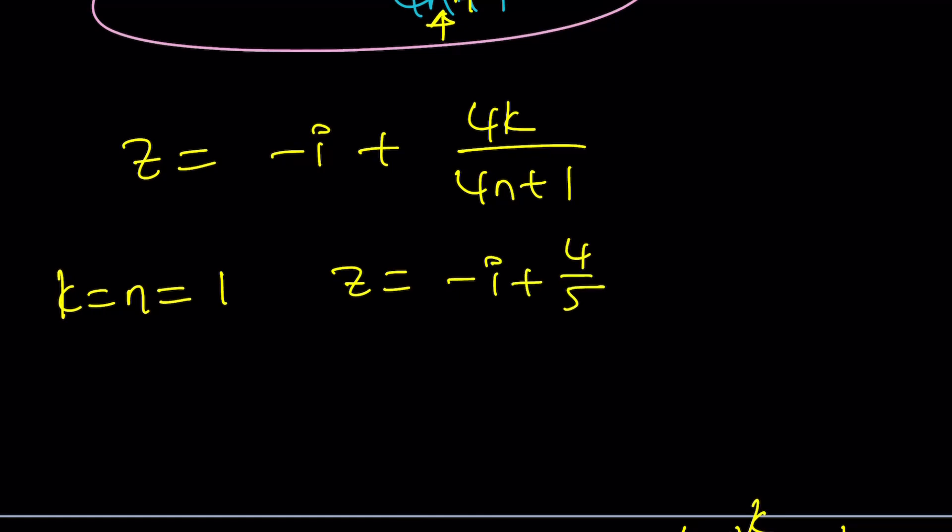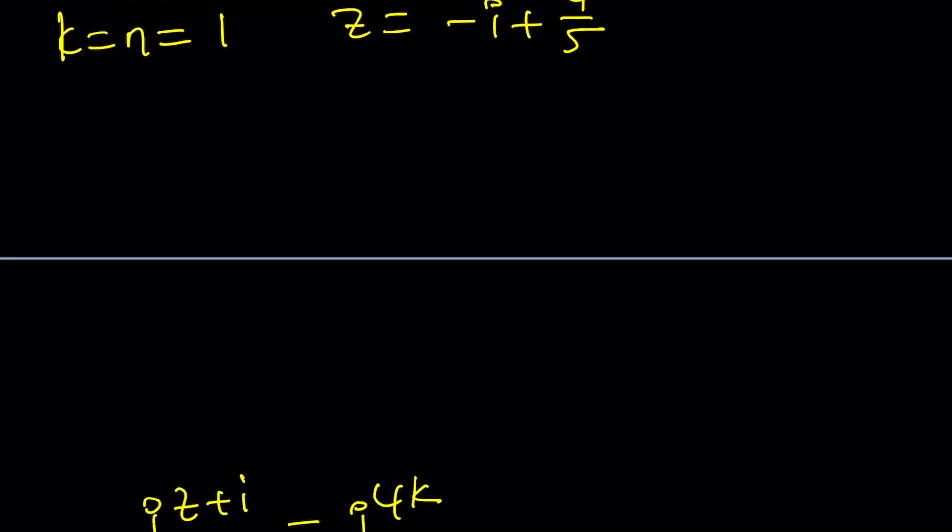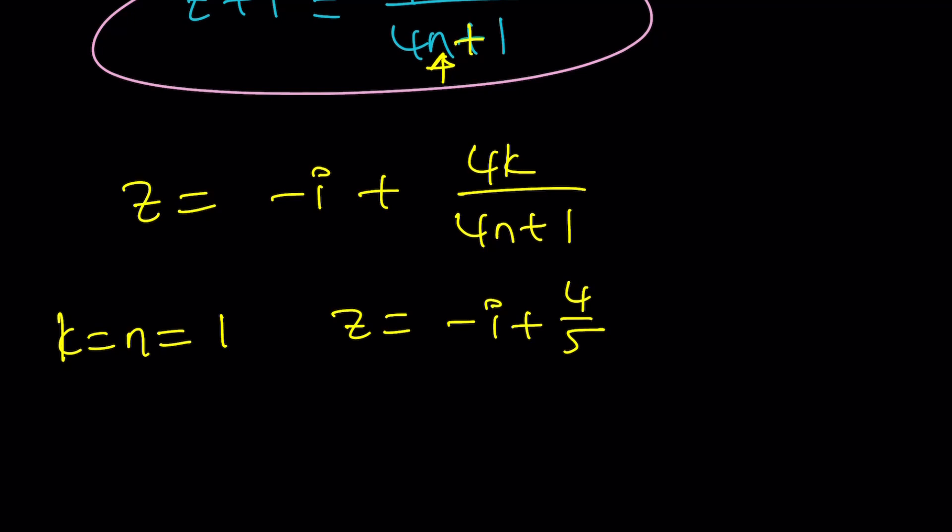We're going to get z equals negative i plus four over five. Do you think that'll work? You can test it out but does that look like a feasible solution to you? Let's plug it in. i to the power z plus i would be i to the power negative i plus 4/5 plus i. i cancels out leaving us with i to the power 4/5. Is that equal to one? Maybe. Sometimes. Who knows.